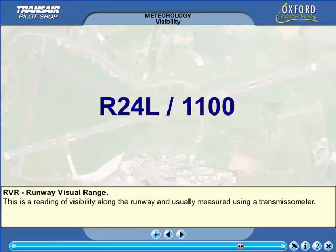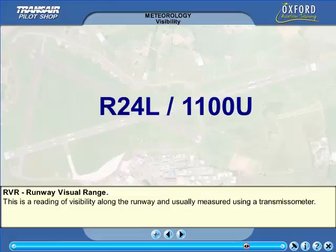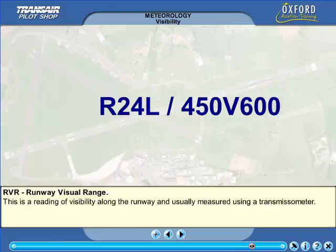The prefix R is the identifier for RVR information. The next field is the runway designator, in this example runway 24L. The value 1100 is the touchdown zone RVR value in meters. RVR values less than 50 meters are reported as M0050. RVRs greater than 1500 meters are reported as P1500. There may be a 10-minute trend reported: U means the visibility has increased over the last 10 minutes, D means it has decreased, and N means no change. The letter V should be included if there are great variations in the measured RVR. Here the RVR has varied between 450 meters and 600 meters during the 10 minutes preceding the observation.